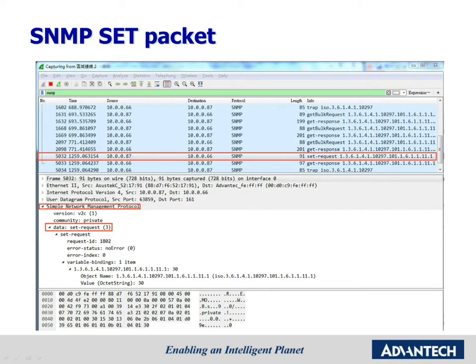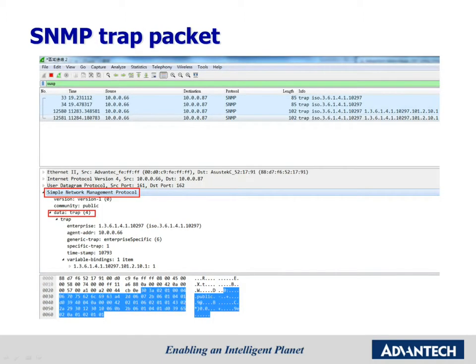For the SNMP SET package in Wireshark, you can type SNMP to filter and get all packages with SNMP protocol. In this SET package with v1 to port 161, you can compare this screenshot with the data format image from the previous page. This is the trap package sent from the agent to the manager, from port 161 to port 162. You can compare this screenshot with the data format image on page 21.